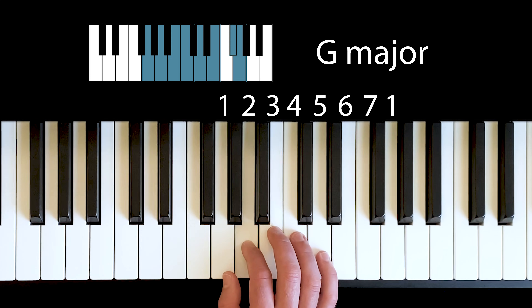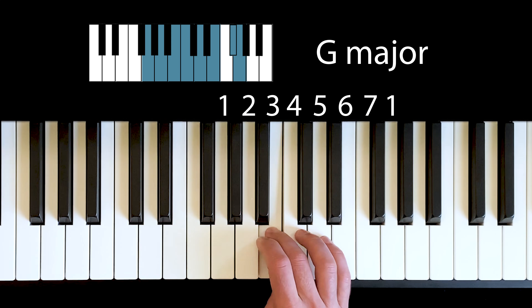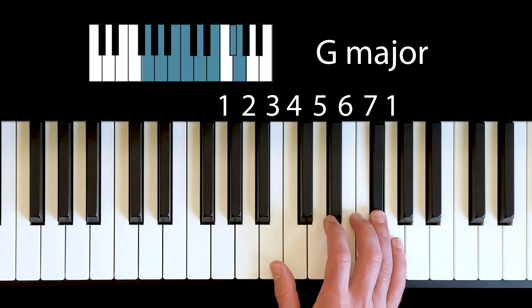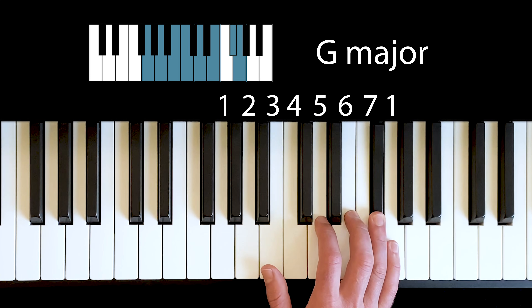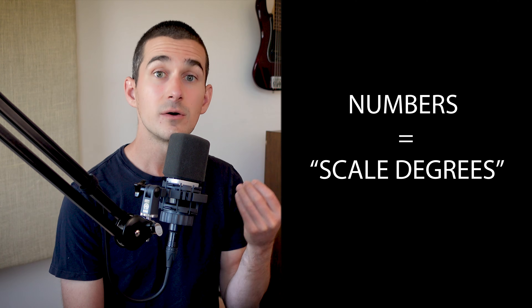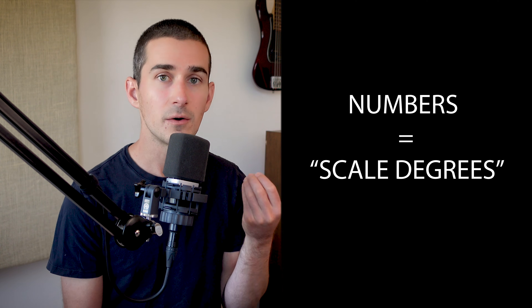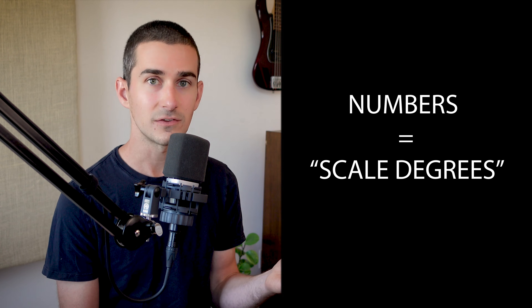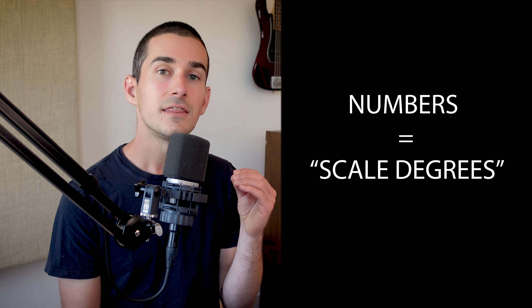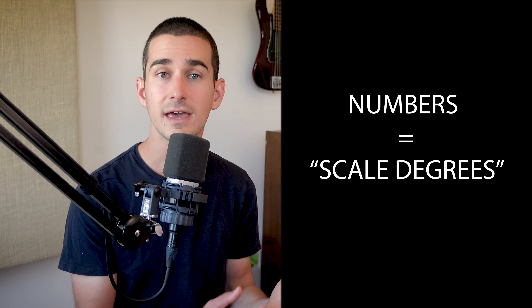You can hear how when I arrive at one, it sounds like we're coming home. So one has a sound to it. And it's actually not just one — every note of the scale, one, two, three, four, five, six, seven, they all have a certain sound. We can call these numbers scale degrees. And when we recognize a melody, regardless of what key it's in, that's because we're recognizing the right set of scale degrees.